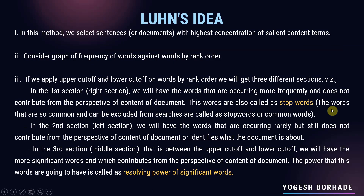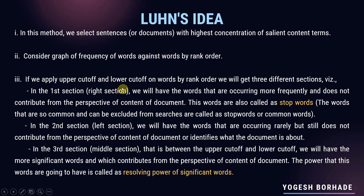In this method, we select sentences or documents with the highest concentration of salient content terms — in short, the more significant words. Considering the graph of frequency of words against words by rank order, applying an upper cutoff and lower cutoff gives three sections. The right section has words occurring more frequently that do not contribute to the content of the document; these are called stop words — words that are so common they can be excluded from searches.